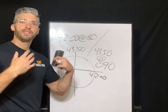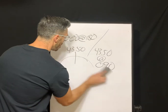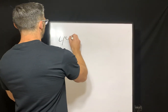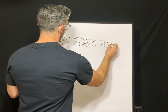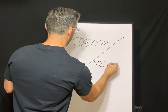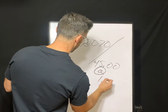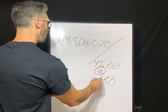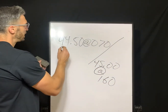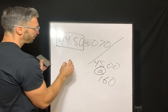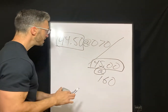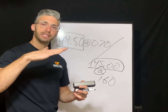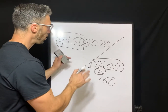Remember, a keratometer — or ophthalmometer, as you might hear it referred to — only measures corneal astigmatism. Let me do one more example. If we have 44.50 at 70 and 45 at 160, our flattest meridian is 44.50 at 70, and we have 45 diopters of strength at 160. There is a difference of half a diopter between those two meridians, so there is half a diopter of corneal astigmatism.